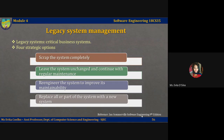There are four options. The first one is to scrap the legacy system completely. This option should be chosen when the system is not making an effective contribution to the business processes. This most commonly occurs when the business processes have changed since the system was installed and are no longer reliant on the legacy system.